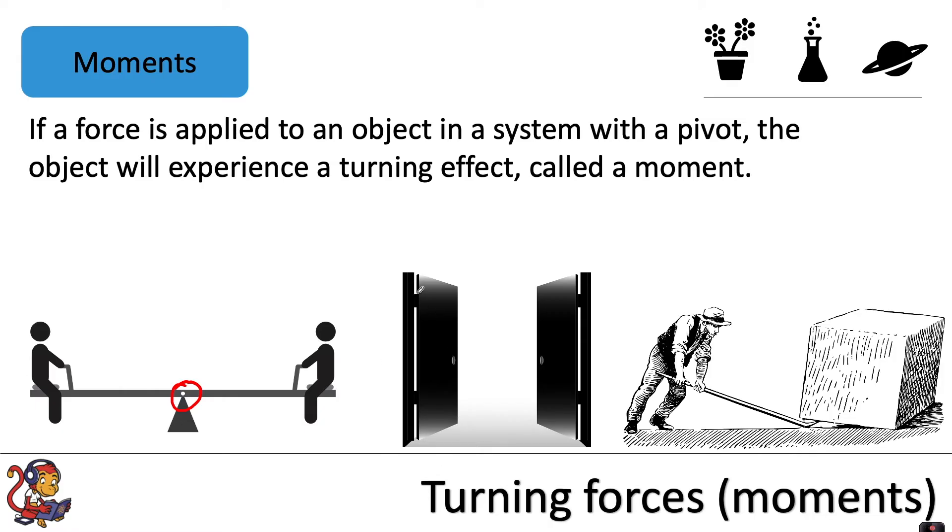In the example of a door, the hinges are where we have the pivot. In this system below, we've got one pivot here and another pivot at the back here.